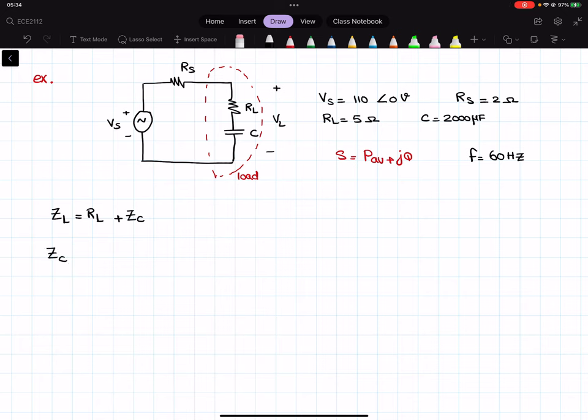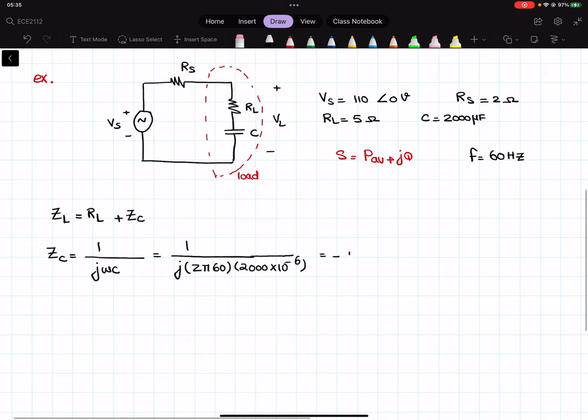Now, ZC is equal to 1 over jωC, and that is equal to 1 over—now here I have jω is 2π multiplied by F—2π times 60. And then C is 200 times 10 to the negative 6 because we have it as microfarads. So that will give us negative j1.326.